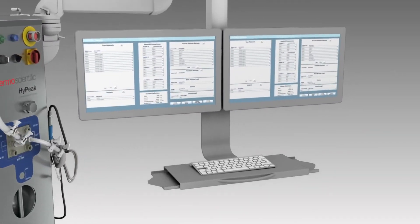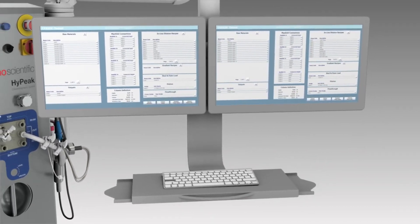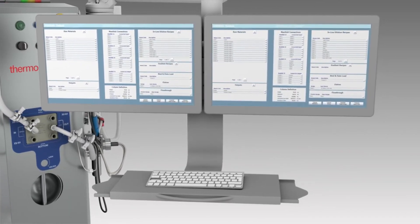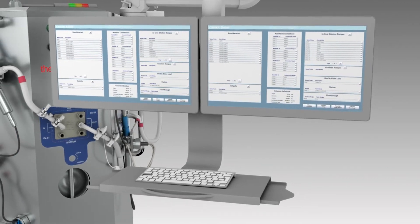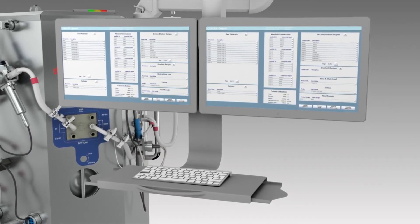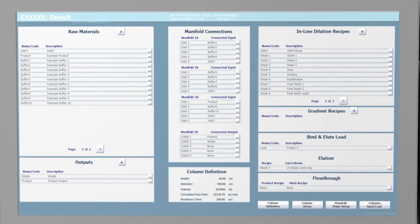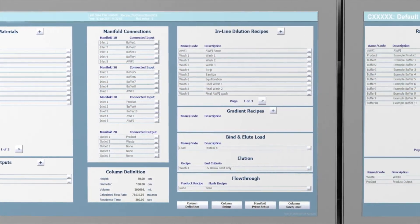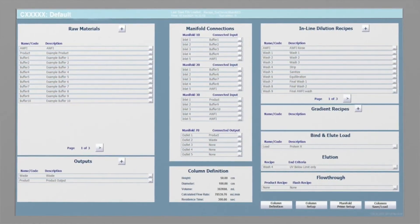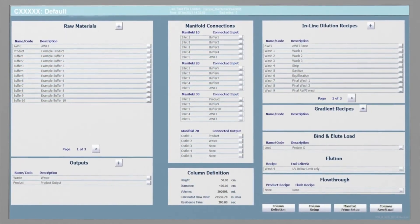The High Peak Chromatography System provides the ability to leverage existing Delta V network infrastructure and allows ease of tech transfer, data integration and data storage. The simplified interface of TrueChrome software provides an enhanced user experience. Configurable user access, audit trail and batch reporting are available as standard features.